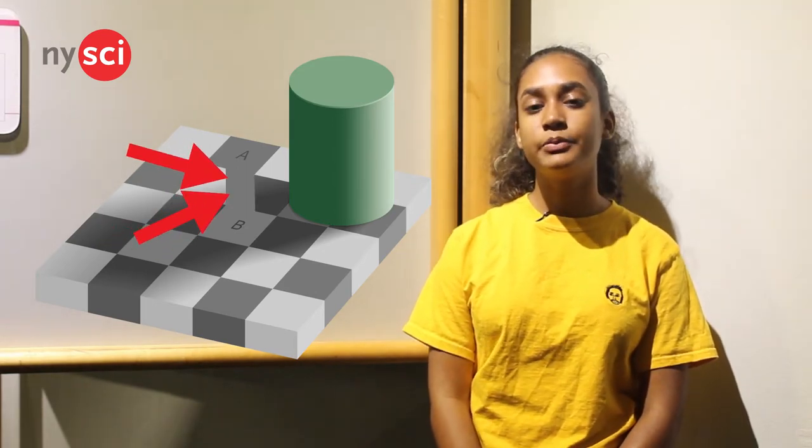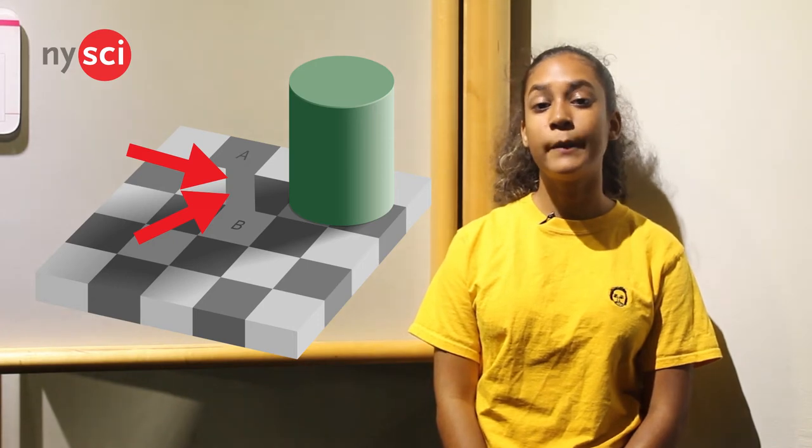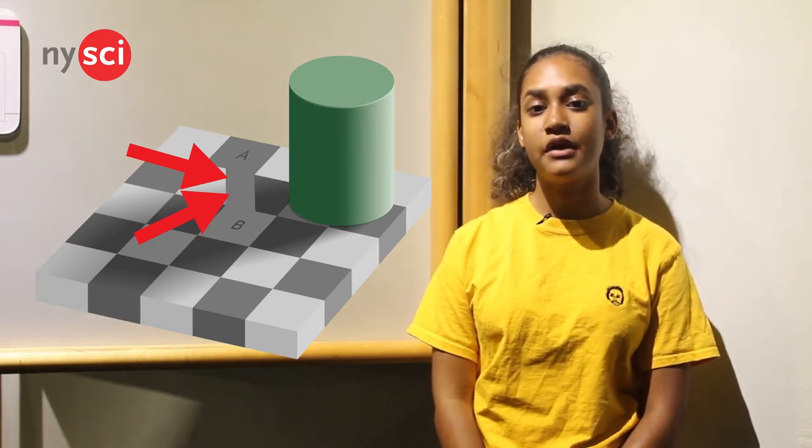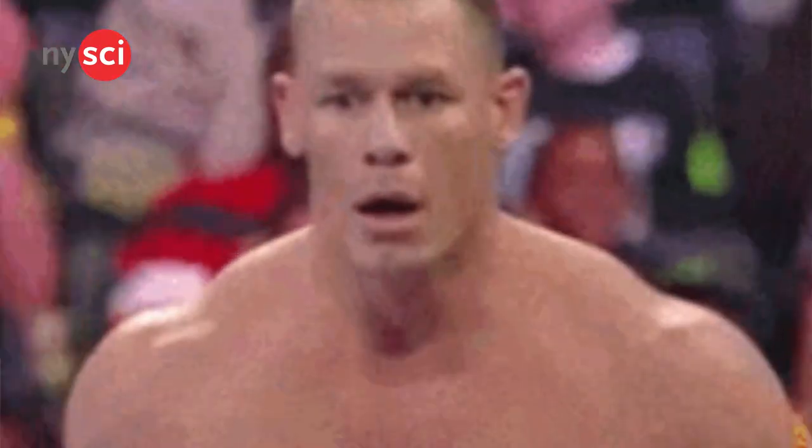The reason we perceive the tiles as different colors is because our brain takes into account the surrounding shadows and tile colors. While it might feel like your eyes are playing tricks on you, it's actually the way your brain and visual system perceive and process the information given to them.